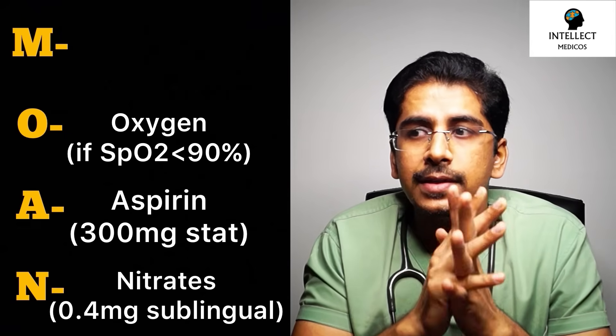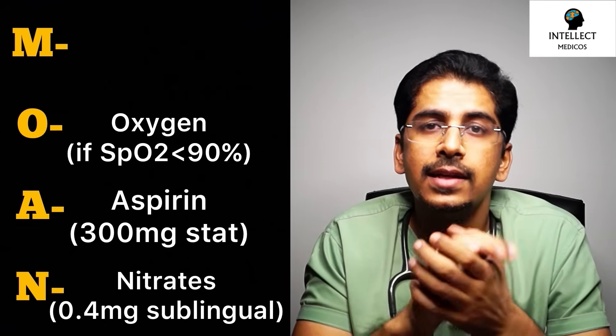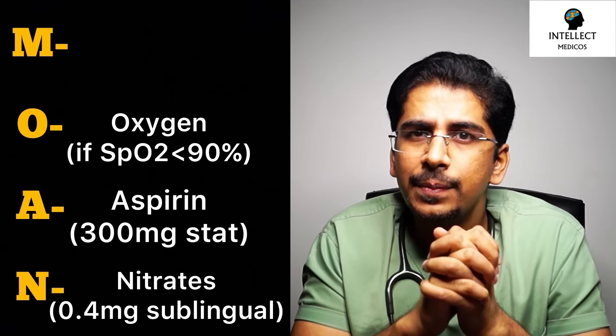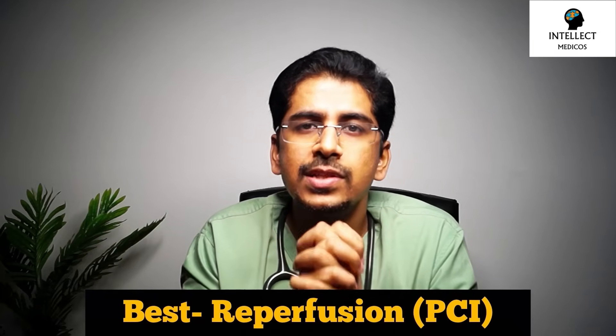In the hospital setting, give IV NTG at 5 to 10 micrograms per minute. Before giving nitrates, always check blood pressure — do not give if the patient is bradycardic or hypotensive. M stands for morphine — IV morphine 2 to 4 mg can be given for pain relief. The definitive treatment is reperfusion via PCI (percutaneous coronary intervention): angiography to identify the occluded artery, then angioplasty with stenting to open it.